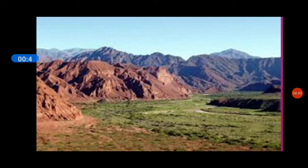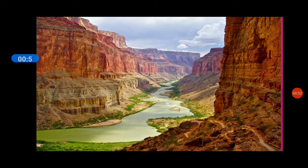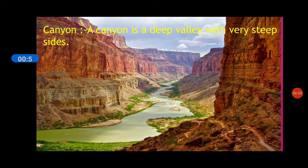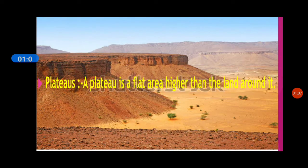A valley is a low land area between high mountains. A canyon is a deep valley with very steep sides. A plain is a flat area on the earth's surface.